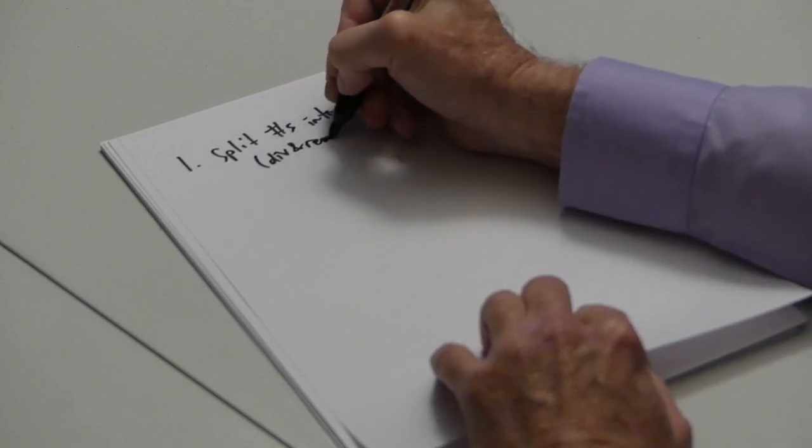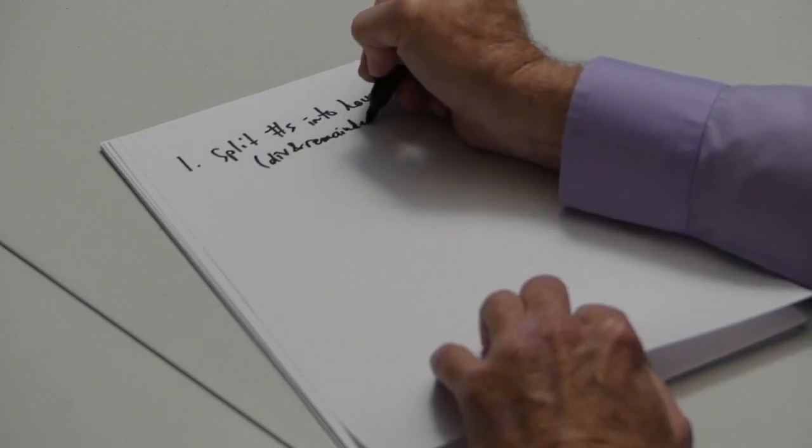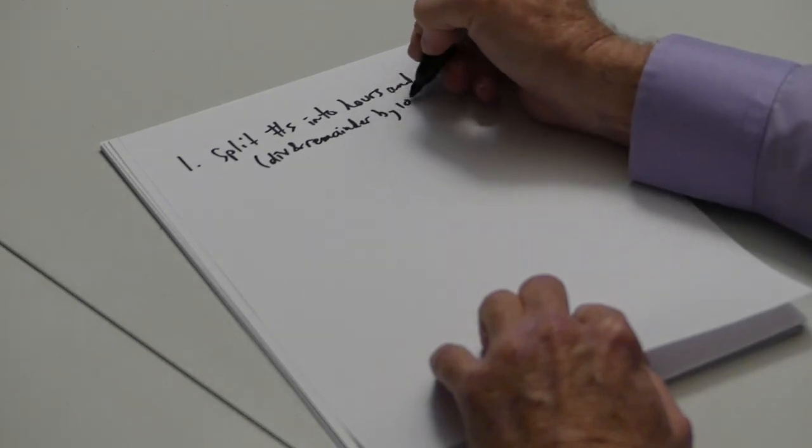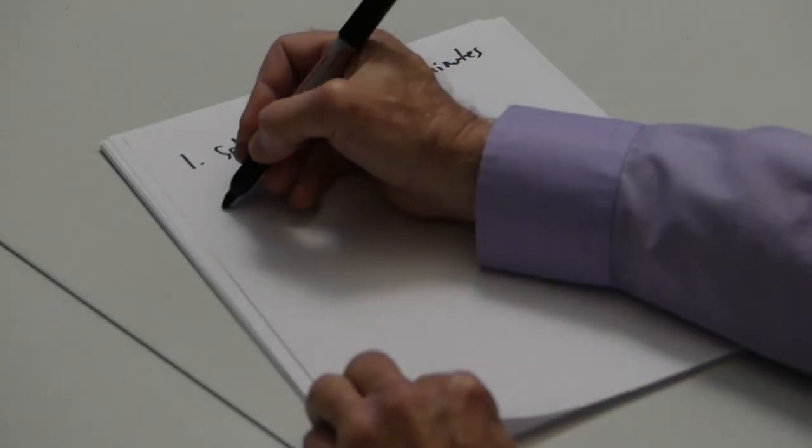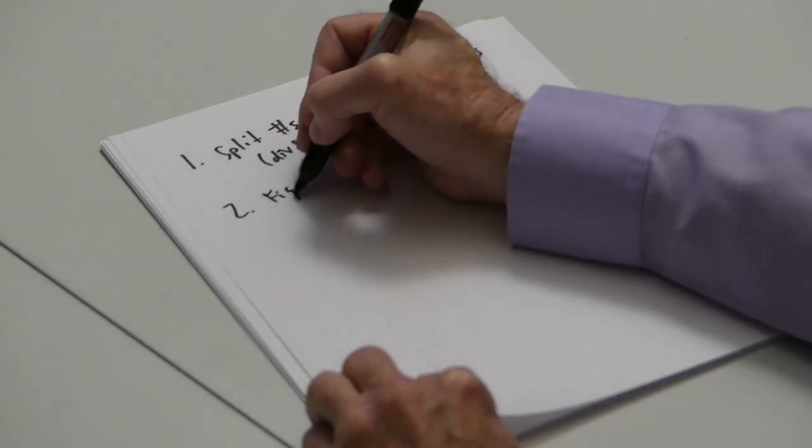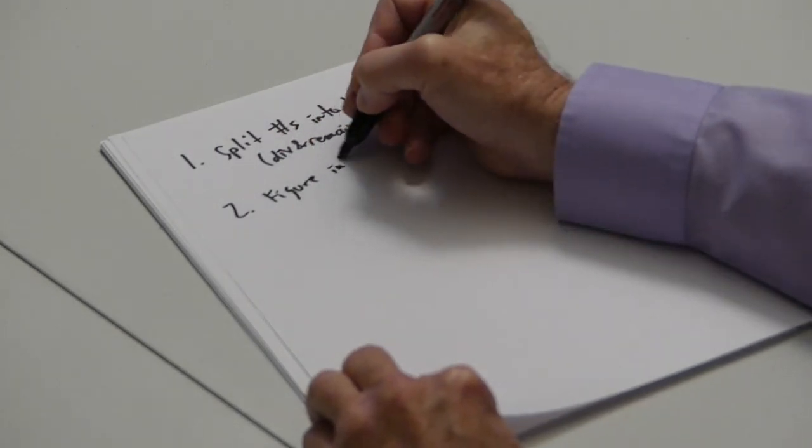Divide and remainder by 100. The next step is going to be to figure out the interval length.